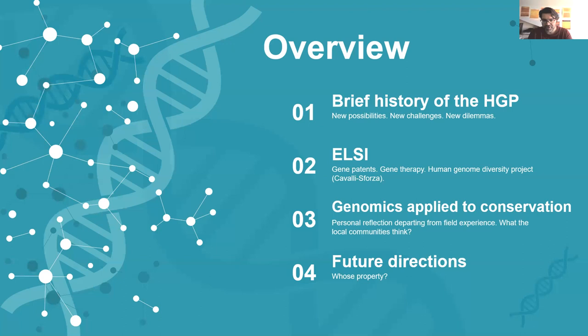A public consortium involved six countries where a big amount of investment was made to sequence the human genome and other organisms too. And a private sector from Celera Genomics, promoted by Craig Venter, that was also interested to sequence the human genome with different approaches and with different missions too.